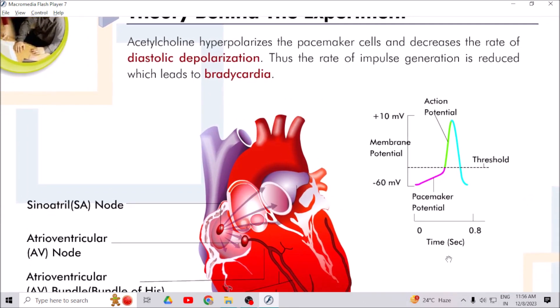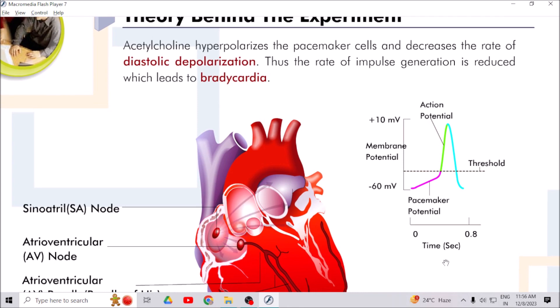Acetylcholine hyperpolarizes the pacemaker cells and decreases the rate of diastolic depolarization. Because of this, the rate of impulse generation is reduced which leads to bradycardia.